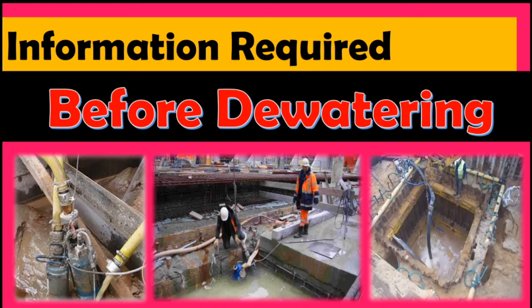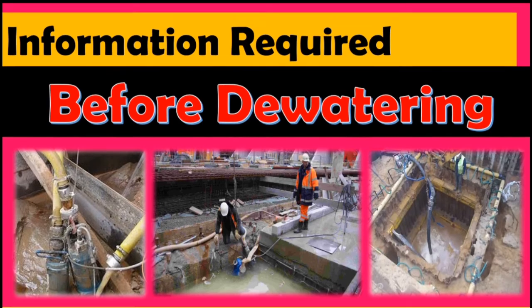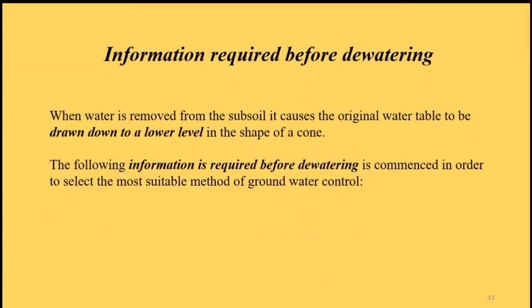When water is removed from the subsoil, it causes the original water table to be drawn down to a lower level in the shape of a cone. The following information is required before dewatering is commenced, in order to select the most suitable method of groundwater control.